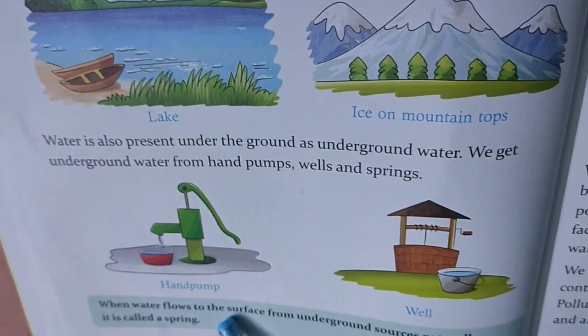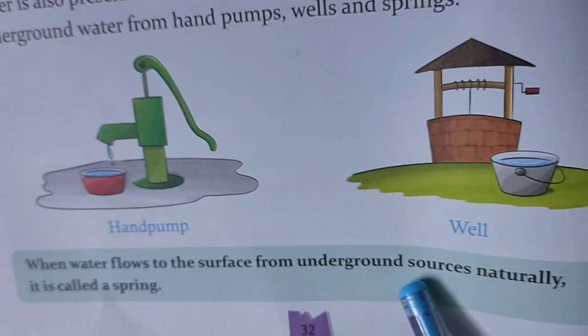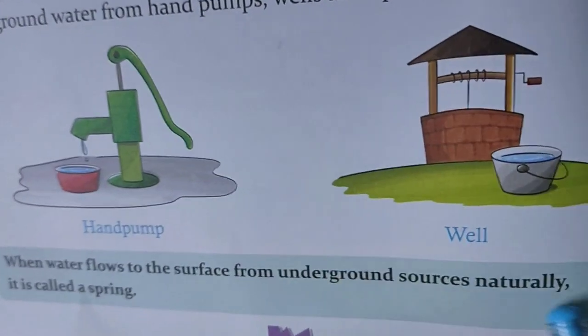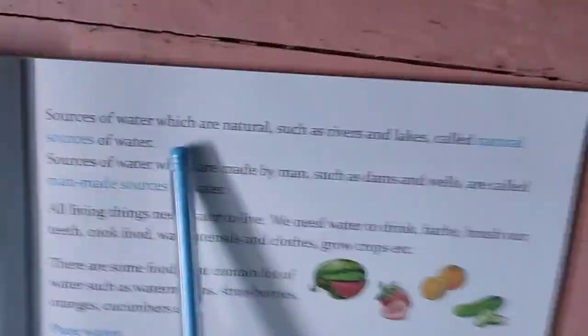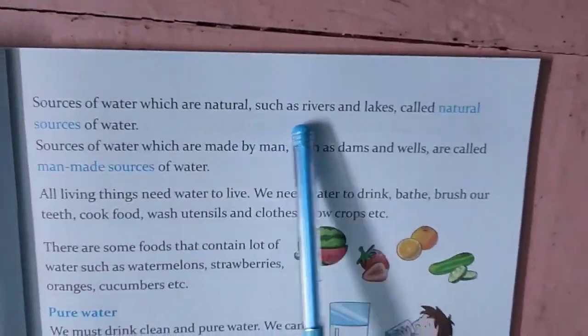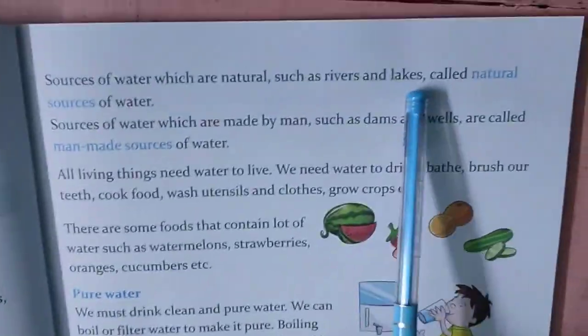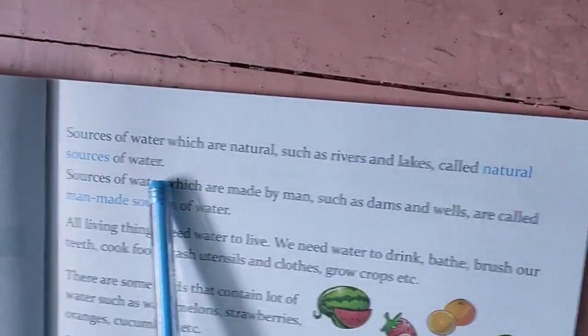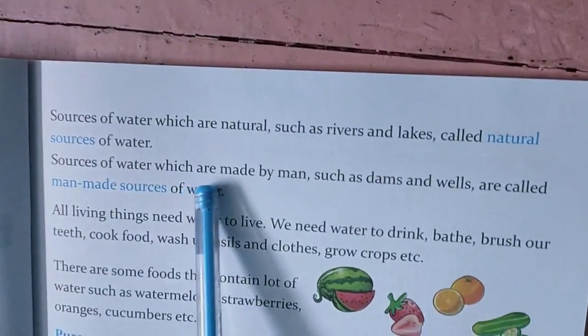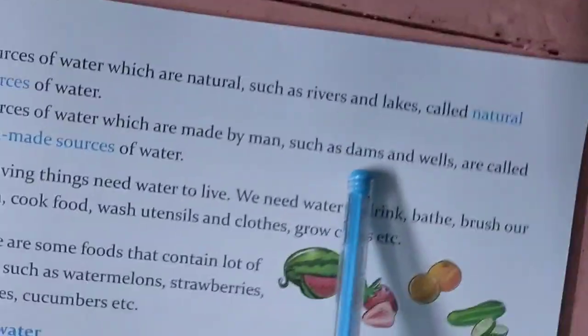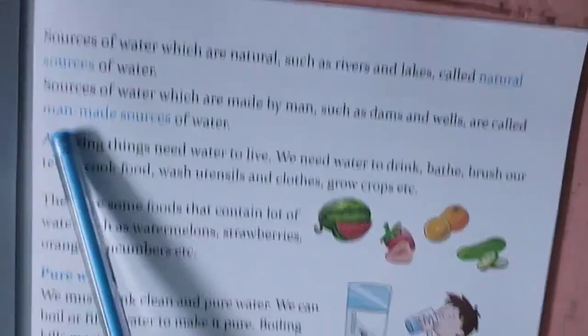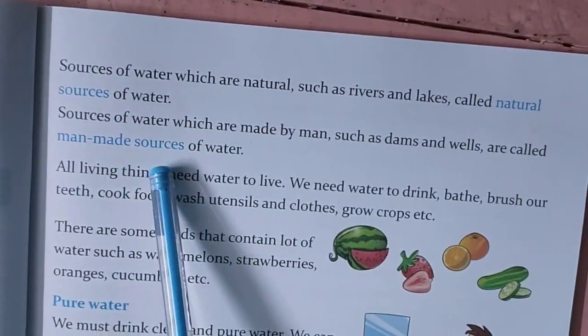When water flows to the surface from underground sources naturally, it is called a spring — it comes out by itself. Sources of water which are natural, such as rivers and lakes, are called natural sources of water. Sources made by man, such as dams and wells, are called manmade sources of water.